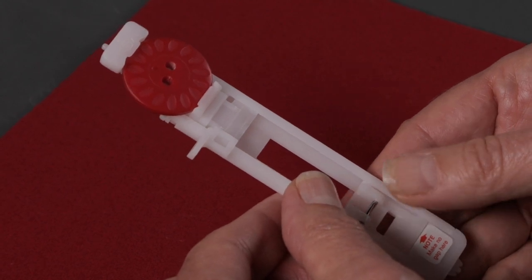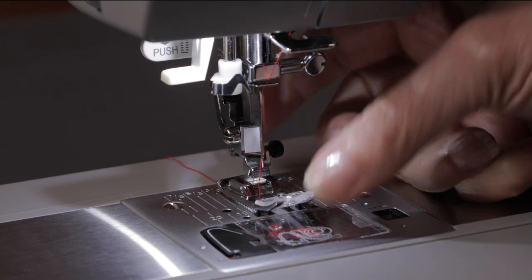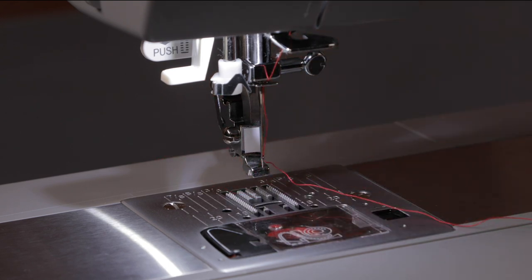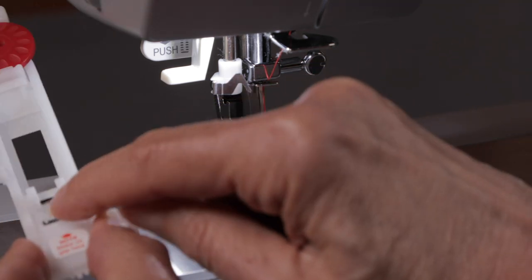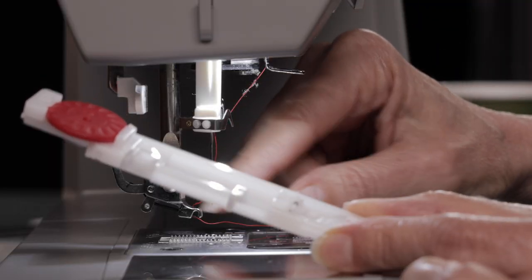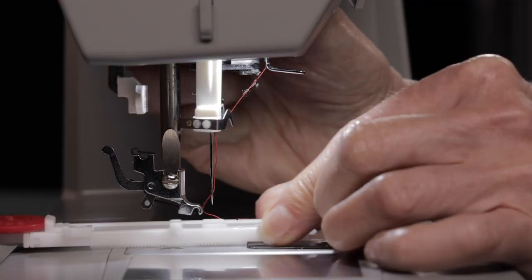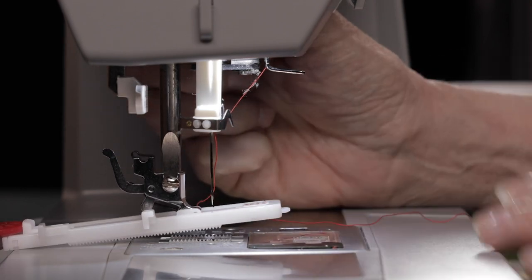Now we're ready to place the foot on the machine. Press the foot release lever at the back of the presser foot to release the foot that's already on the machine. We're going to line up the presser foot pin of the buttonhole foot underneath this part of the presser foot holder and lower the presser foot holder to snap the foot in place.